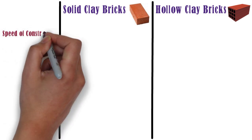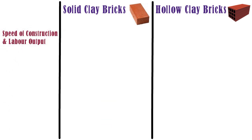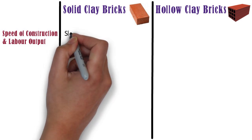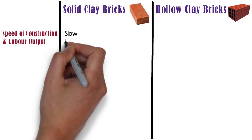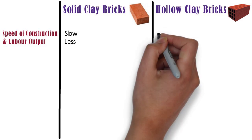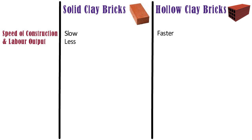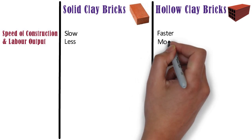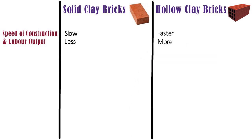Speed of construction and labor output. In case of solid clay brick work, the speed of construction is slow and labor output is less as compared to hollow clay brick work. Whereas, in case of hollow clay brick work, the speed of construction is faster and the labor output is more than the solid clay brick work.